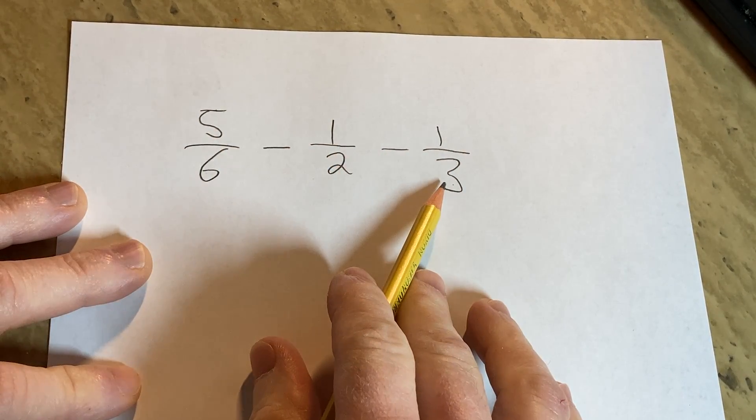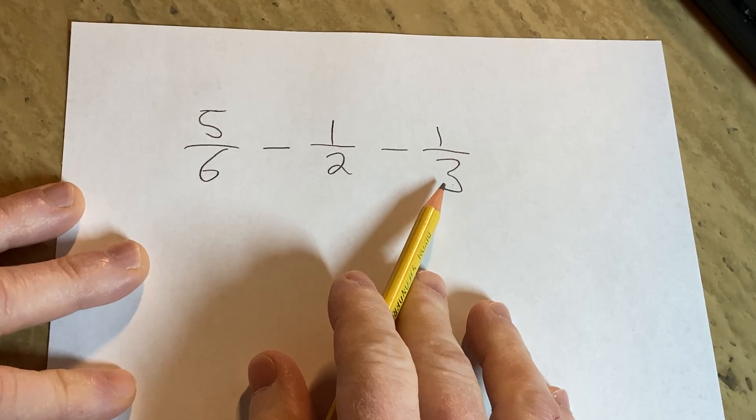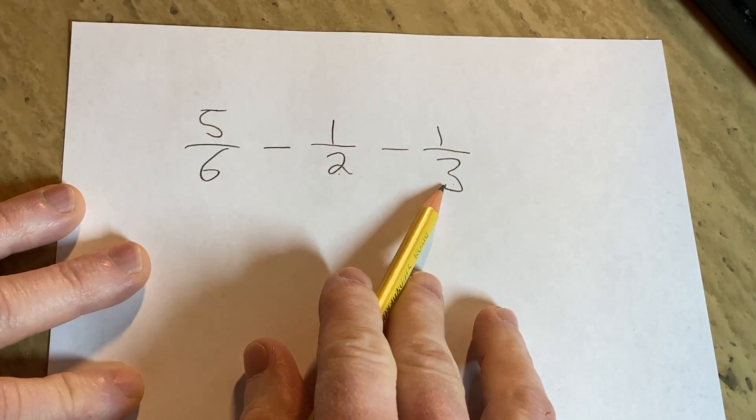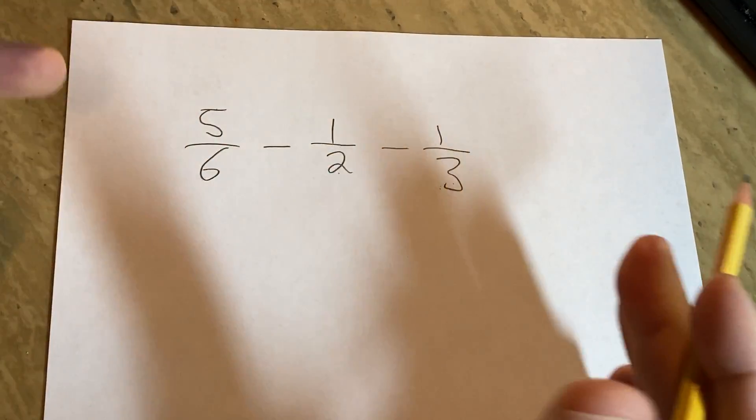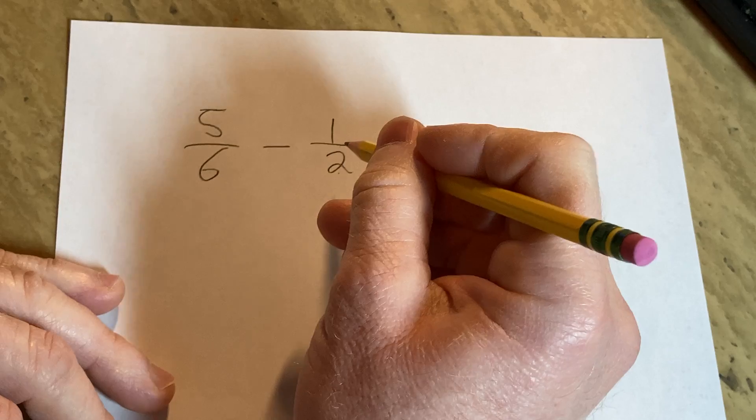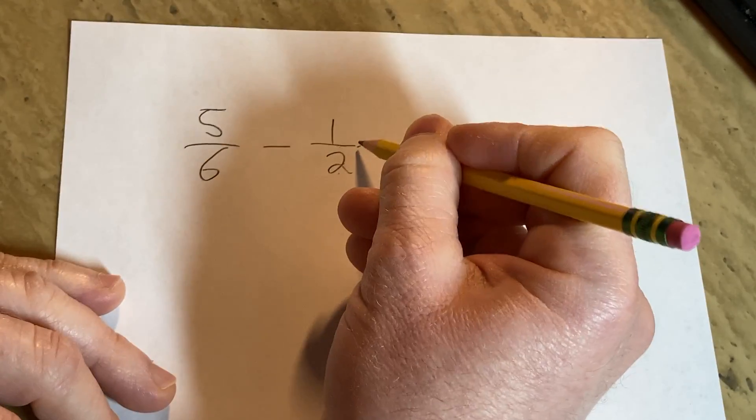So you have 6, 2, and 3. So 6 is going to be the number we want because we already have a 6 here. We can turn this into a 6 and we can turn this into a 6. The goal is to turn all of these numbers into the same number, which people call a common denominator. So let's make this a 6 by multiplying it by 3 over 3.